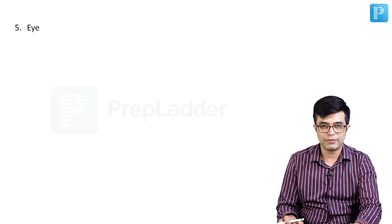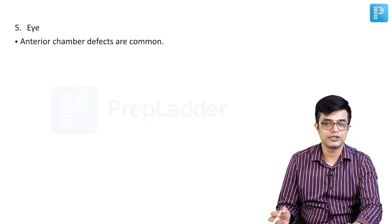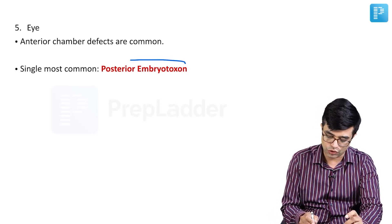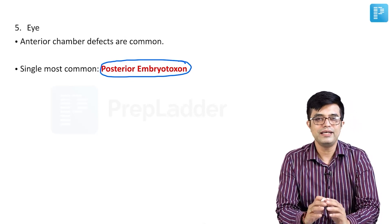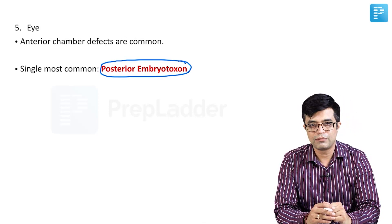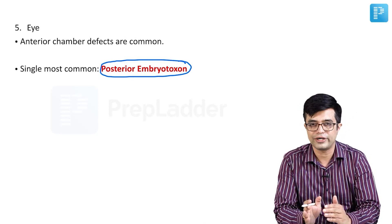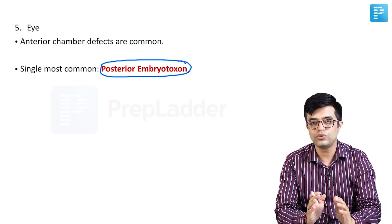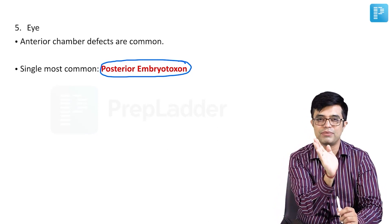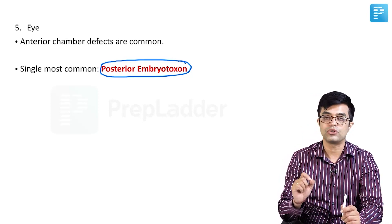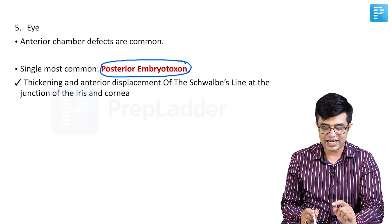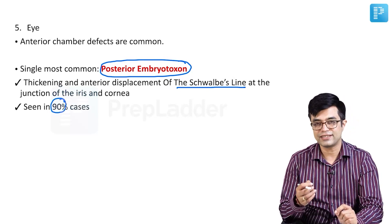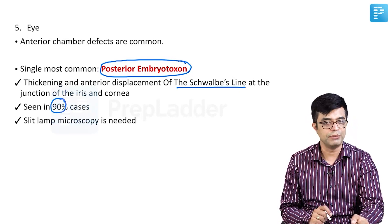Next is ocular involvement. The most common significant abnormality is called posterior embryotoxon. There is a line in the eye called Schwalbe's line, present at the junction of iris and cornea. In these patients, this line becomes excessively thickened and slightly anteriorly placed. On slit lamp microscopy, you will find a prominent line present laterally on the eyeball. This is posterior embryotoxon — thickening and anterior displacement of Schwalbe's line — seen in almost 90 percent of cases.